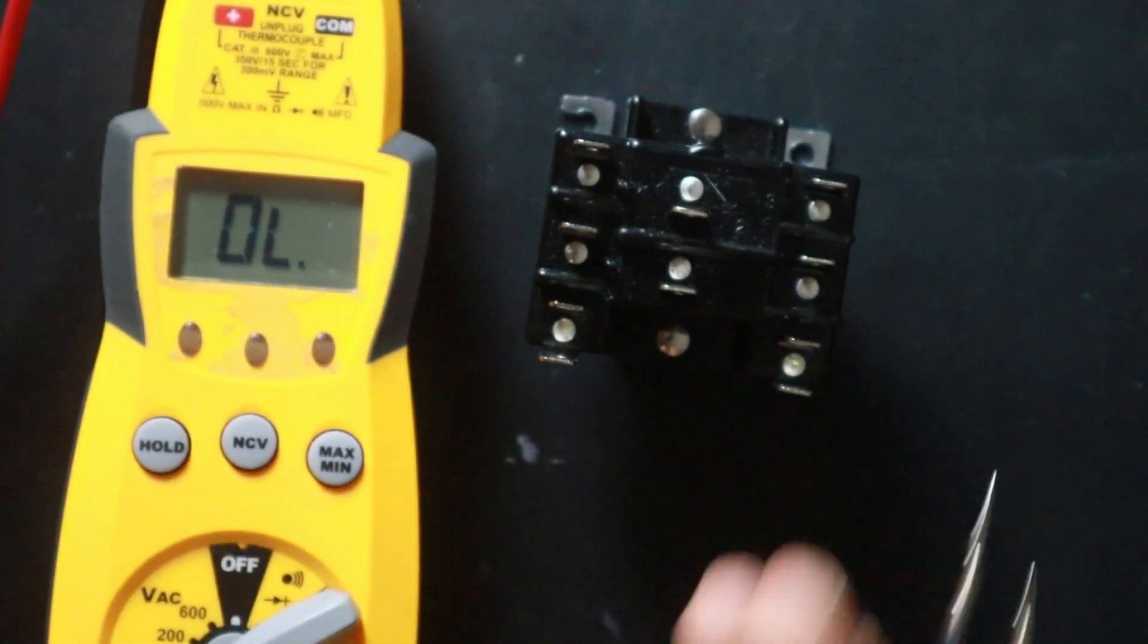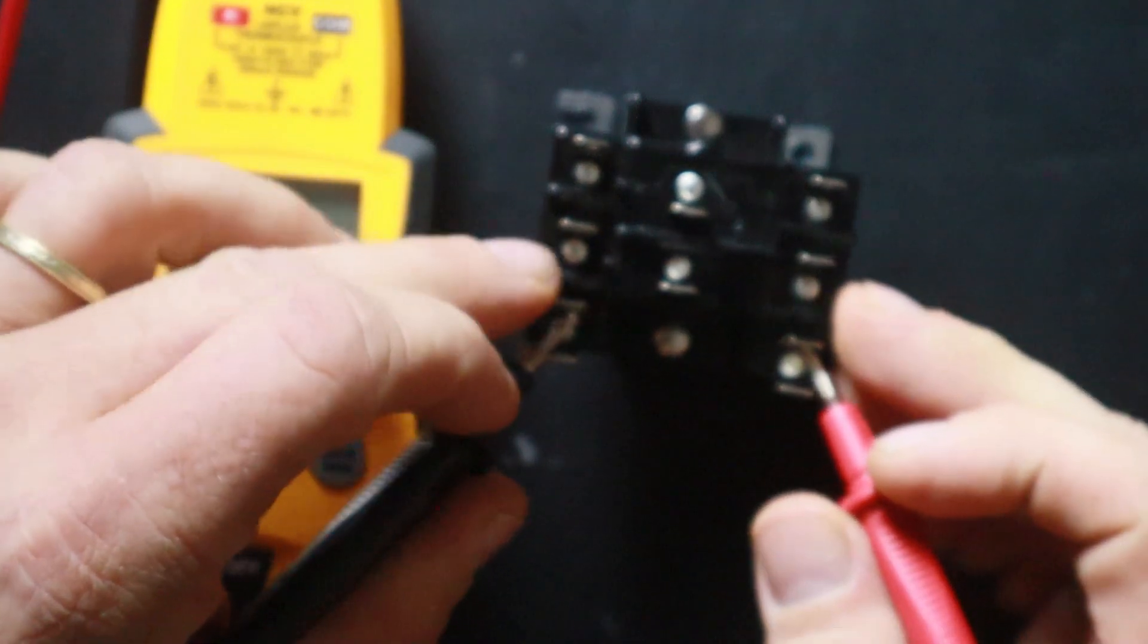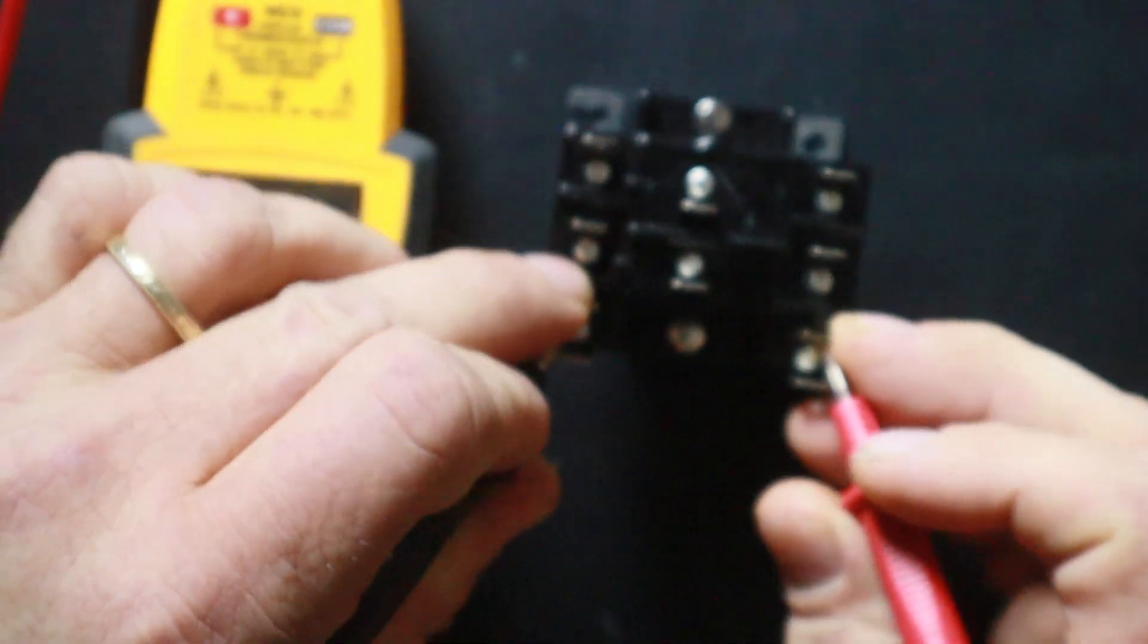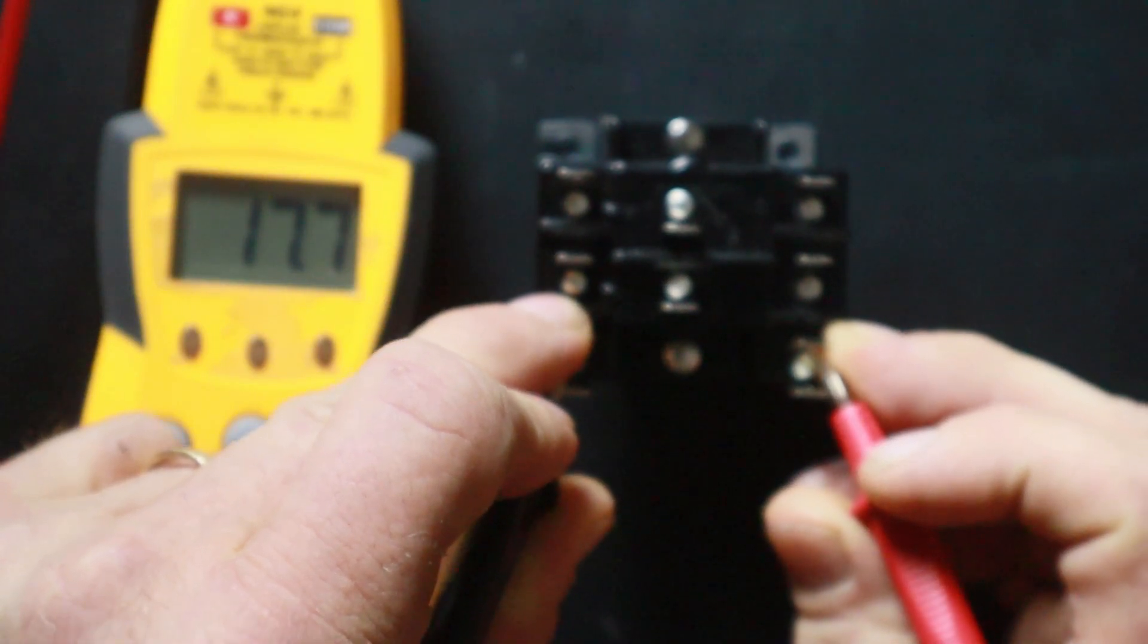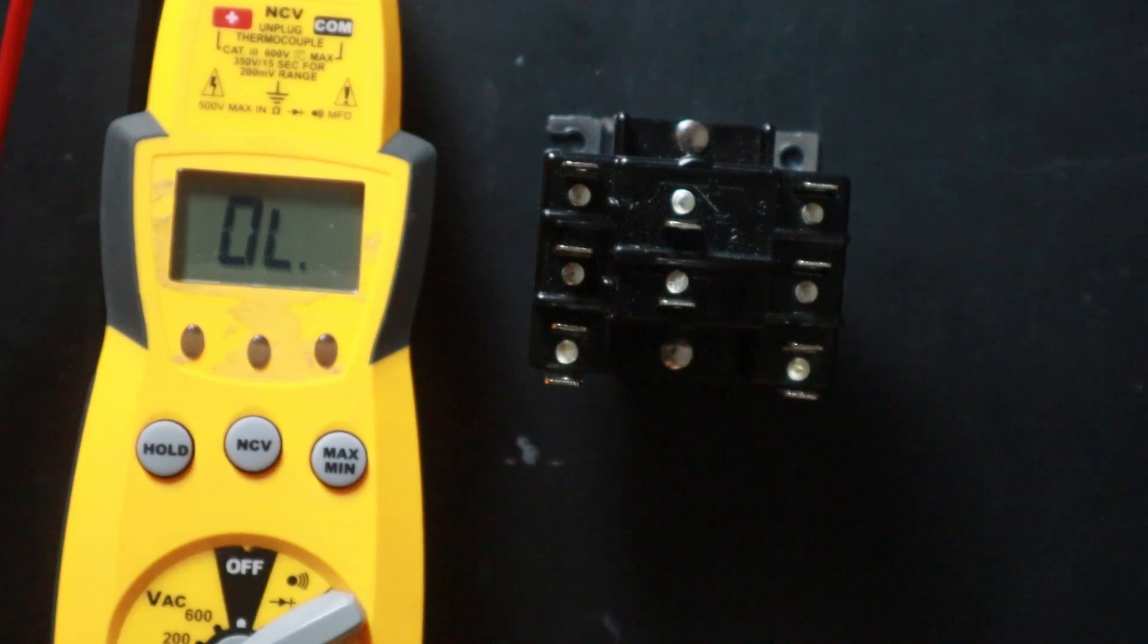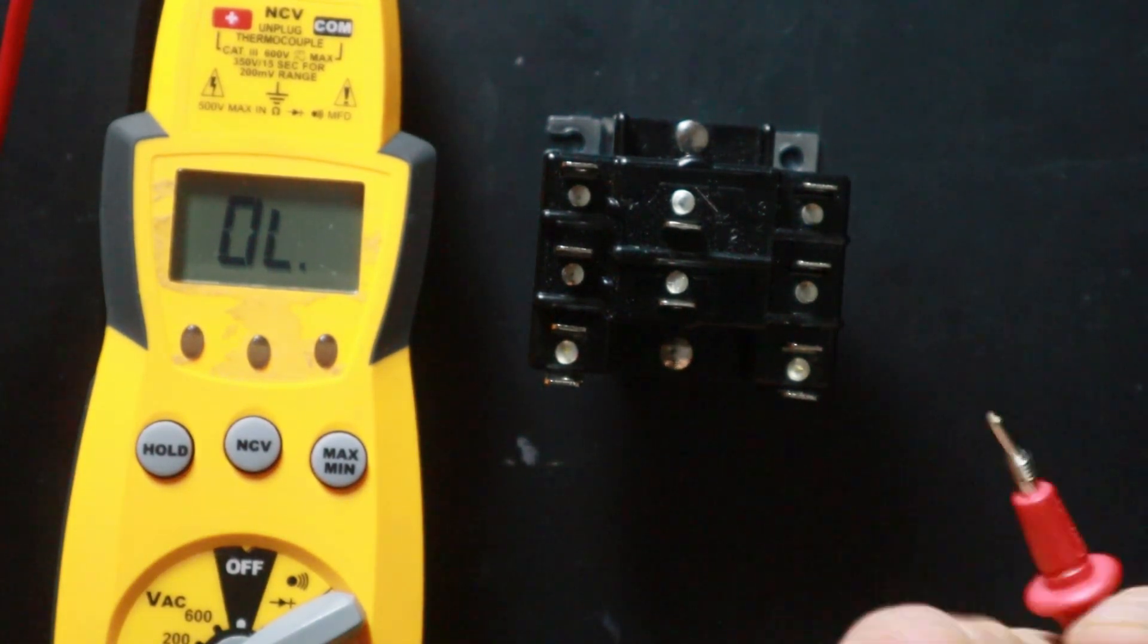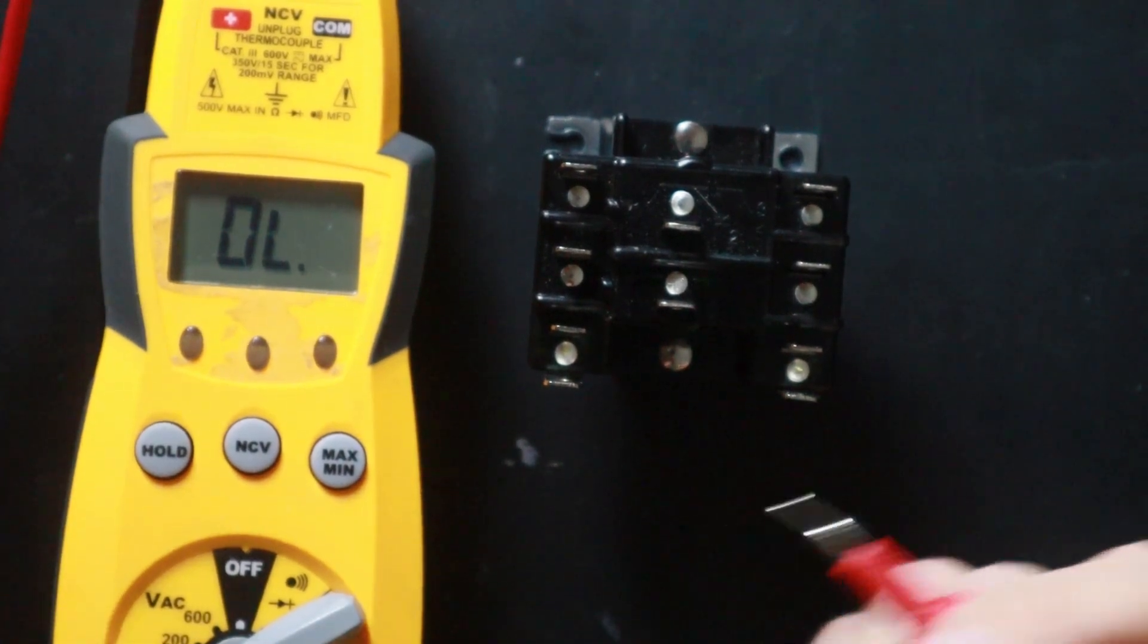So when you're taking ohm readings and you're ohming out a coil, for example, I find generally I usually find between 10 and 20 ohms. So you can see here on this coil, I'm reading 17.7. So that's pretty typical of a lot of relays I work with in HVAC. Once again, it's going to be manufacturer specific. So you do want to look these things up or at least test enough of them to get an idea of where they should be.